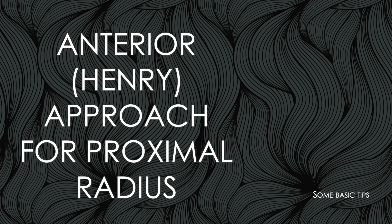In this video I will be talking about the anterior approach to the proximal radius — Henry's approach. There has been concern among residents that this approach, when used for proximal radius structures, carries a risk of posterior interosseous nerve palsy, and the antivascular structures proximally can also limit exposure. Residents often opt for the posterior approach, which has extensive dissection of muscles and muscular branches that can injure muscles and also risks manipulation of the posterior interosseous nerve and its branches.